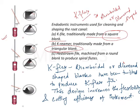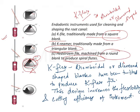The reamer has a triangular cross-section. The K file has a square cross-section. The Hedstrom file is also notable here — it has spiral flutes and is machined from a round blank to produce those spiral flutes. So the reamer has a triangular blank with fewer flutes, the K file is from a square blank, K flex from a rhomboidal blank, and the Hedstrom file from a round blank.